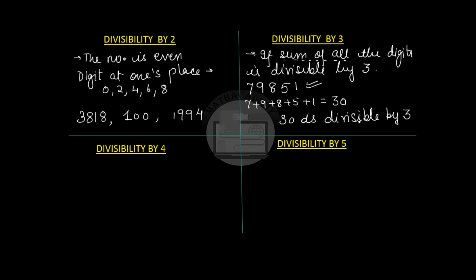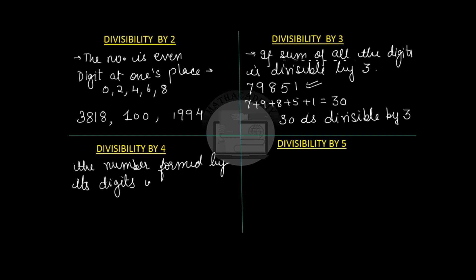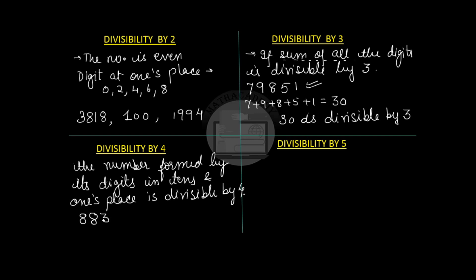Divisibility by 4: a number is divisible by 4 when the number formed by its digits in the tens and ones place is divisible by 4. For example, take the number 888312. The tens place digit is 1 and the ones place is 2, forming the number 12. Since 12 is divisible by 4, the given number is divisible by 4.